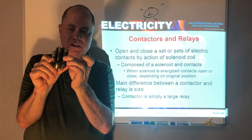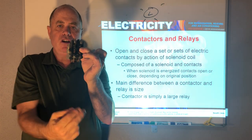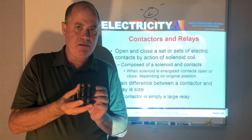And when you energize the coil, it pulls in the contacts and then lets the voltage pass through the contacts to the electrical load, like a compressor and a condenser fan motor.